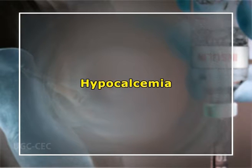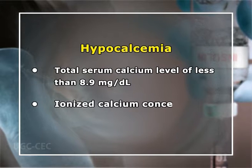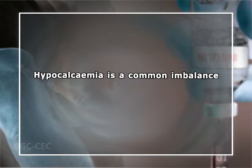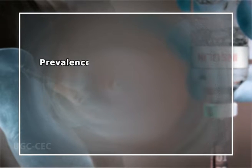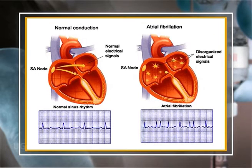Hypocalcemia may be defined as a total serum calcium level of less than 8.9 mg/dL and an ionized calcium concentration of less than 4.6 mg/dL, though reporting laboratories often have slightly differing reference values. Hypocalcemia is a common imbalance in critically ill patients; the prevalence of ionized hypocalcemia is reported to range from 60% to 85% in medical, surgical, and trauma patients. Hypocalcemia is serious in that it can potentiate cardiac arrhythmias and seizures. Although mortality is greater in patients with hypocalcemia, this outcome does not appear to be independently associated with the imbalance.